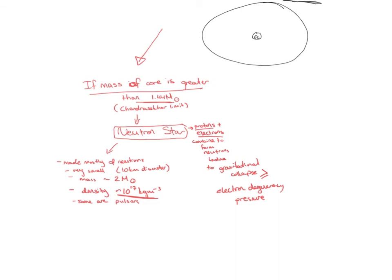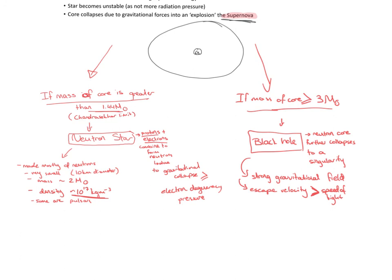Not only are neutron stars very dense, but some of them can also rotate very fast. You might have heard about pulsars — neutron stars can emit beams of waves as they rotate, and because these beams look like flashes of a lighthouse, they're called pulsars. Another possible evolution of the star, if its core mass is greater than three times the mass of the Sun, is a black hole.